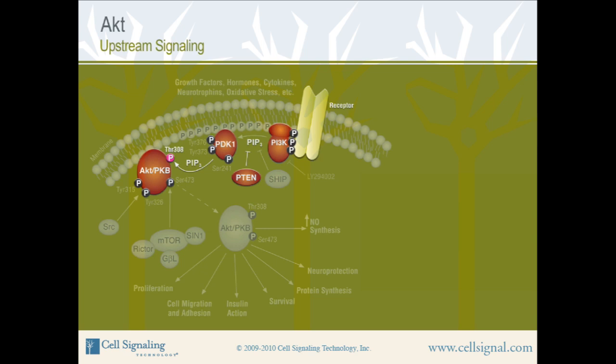Full activation of AKT requires a second phosphorylation at serine 473 by mTORC2. mTORC2 is the rapamycin-insensitive complex that consists of mTOR, RICTOR, GβL (also called MLST8), and SYN1. Serine 473 is within the C-terminal regulatory domain of AKT.